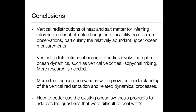In conclusion, the vertical redistribution of heat and salt is quite important for inferring information about climate change and variability from ocean observations, particularly for the upper ocean, which we believe is relatively well observed. The vertical redistribution of ocean properties involves very complex ocean dynamics, particularly vertical velocity and isopycnal mixing. More research is needed, especially now that we have so many ocean synthesis products available that provide a lot of information about vertical velocity. We should make better use of existing ocean synthesis products to look for more robust and reliable information about these dynamical processes, which are important for the vertical transport of heat and salt.